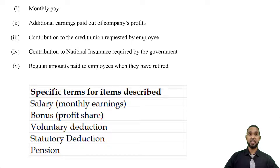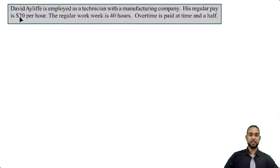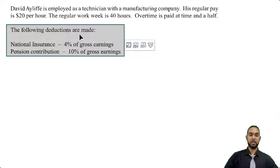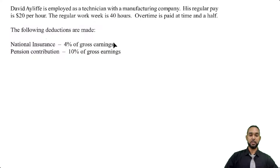Let's take a look at Part B. David Aliff is employed as a technician with a manufacturing company. His regular pay is $20 per hour. The regular work week is 40 hours. Overtime is paid at time and a half. The following deductions are made: national insurance at 4% of gross earnings, and pension contribution at 10% of gross earnings.